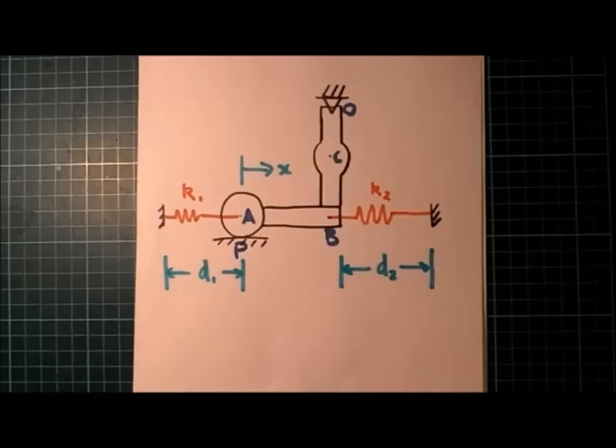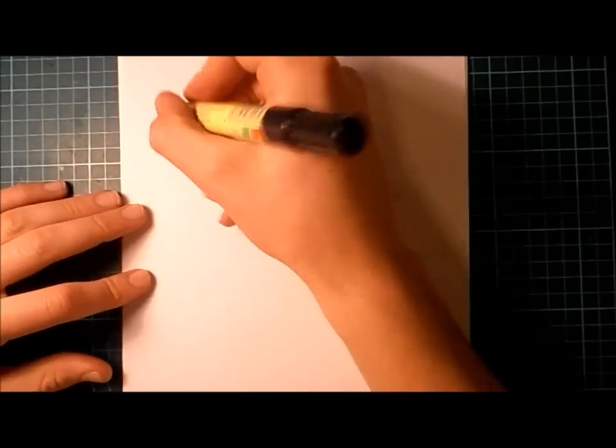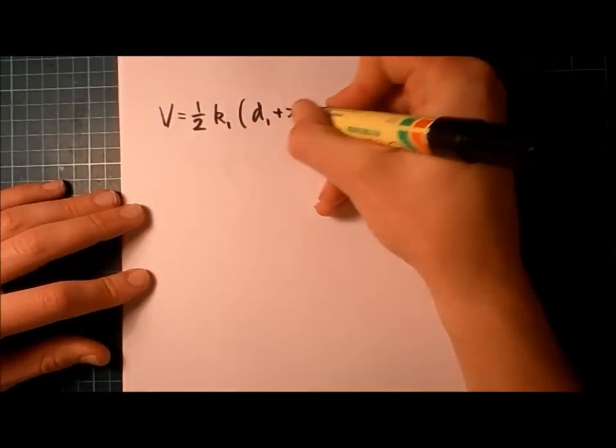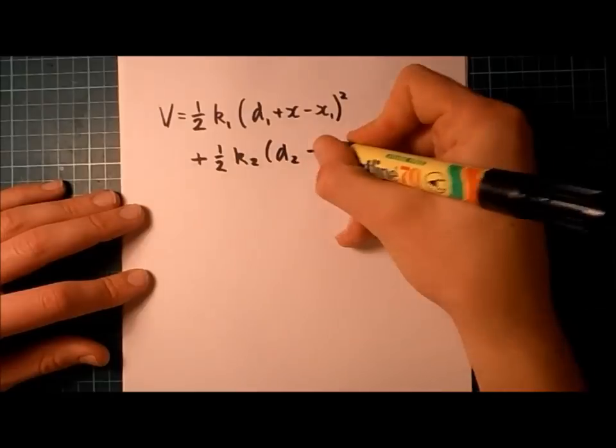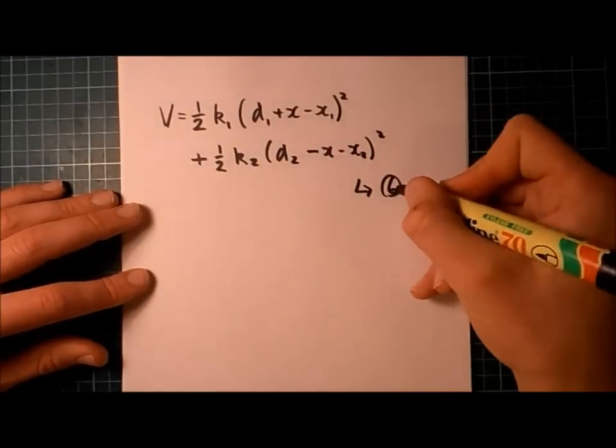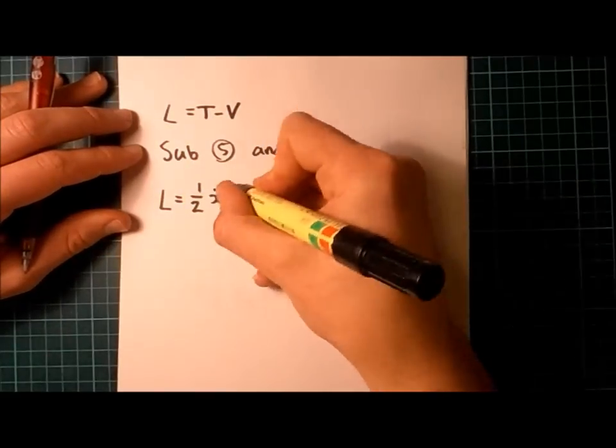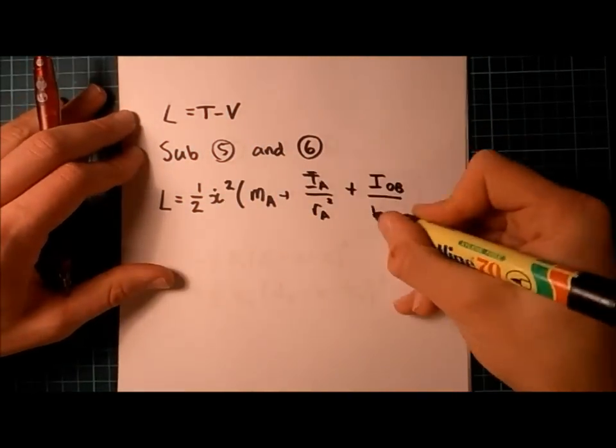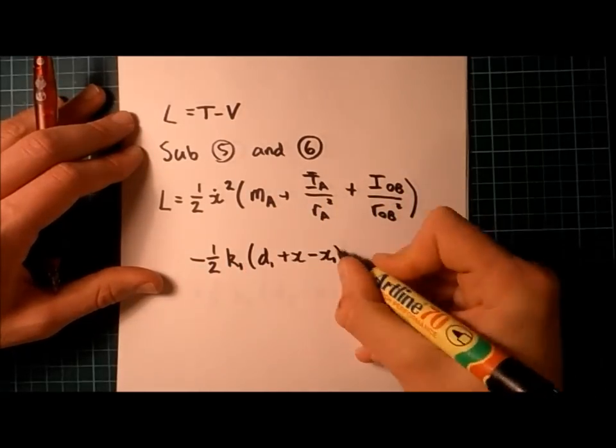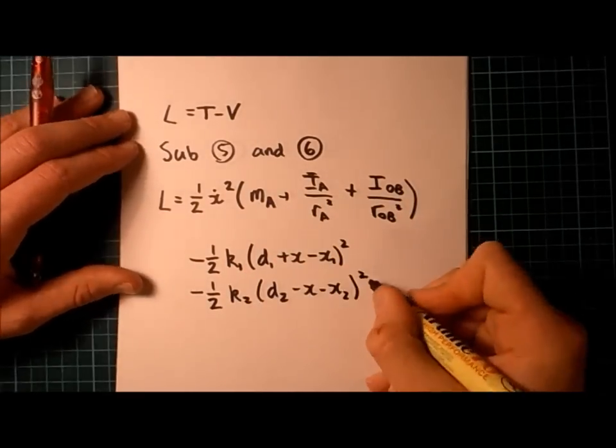Next, we're interested in our potential energy, and that comes from the springs K1 and K2. So remember, our potential energy is half times K, times the distance from the unstretched length, squared. So, we've got T, and we've got V. Now we can find L. L is simply T minus V. So, substituting those values in, here's what we get for L.